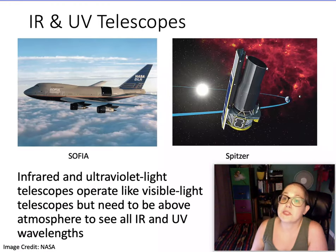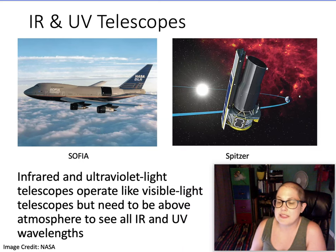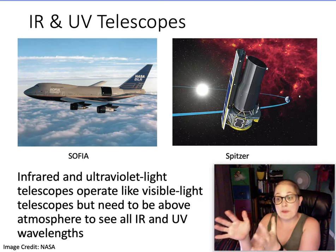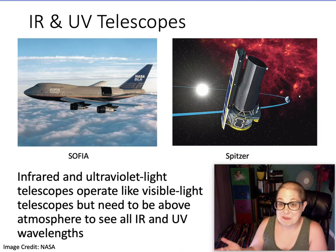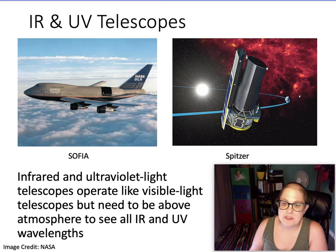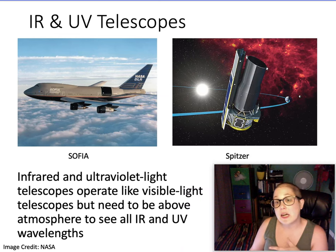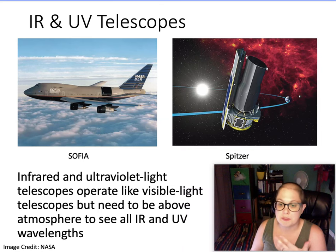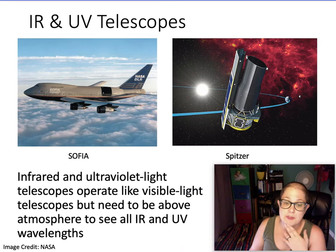Infrared and ultraviolet telescopes — these are actually both infrared type telescopes shown here. There isn't a dedicated ultraviolet telescope right now, but the Hubble Space Telescope also does ultraviolet. On the left is an image of an airplane called SOFIA, out of which they actually stick an infrared telescope — one way to get high in the atmosphere is to go on a plane. They use that to do some infrared observations. Infrared and ultraviolet are similar in concept to optical telescopes, but the composition of the mirrors and the detectors may differ because it's a different type of light.